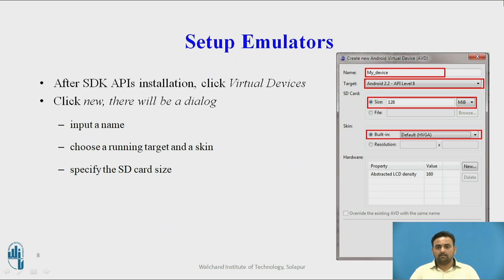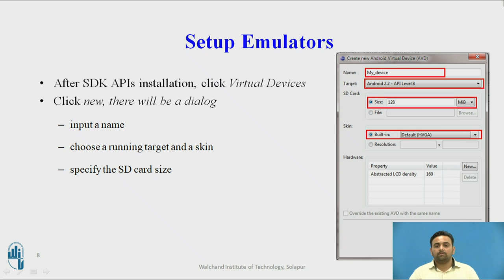During emulator setup, you have to click on the virtual device option and provide the specifications for that virtual device — including the name for the device, what platform it should use, and the memory size. You also need to specify the skin, for example HVGA is available there. You select the proper option and then proceed to the next step so that the emulator can be set up.